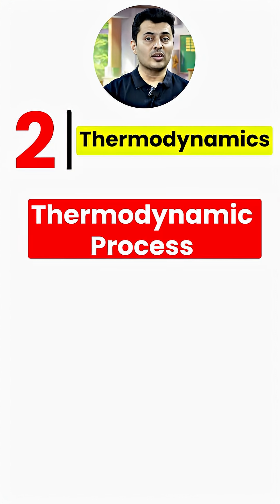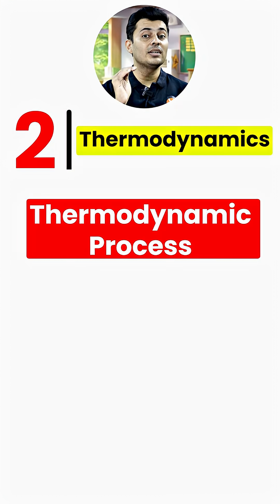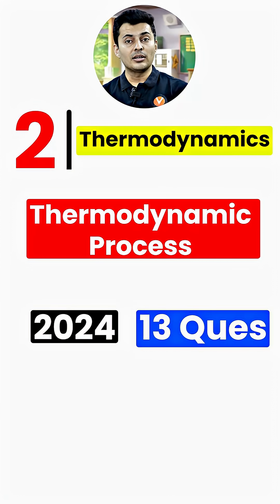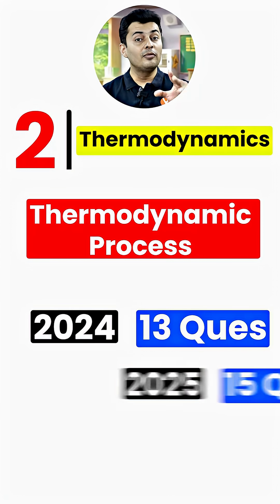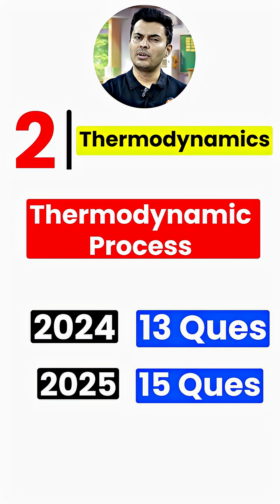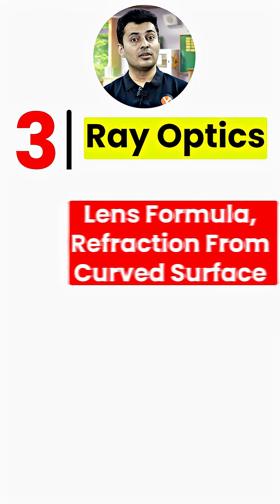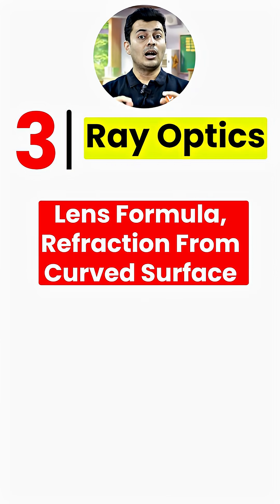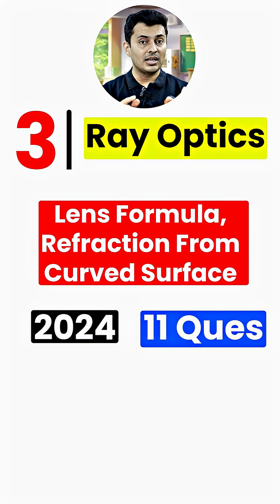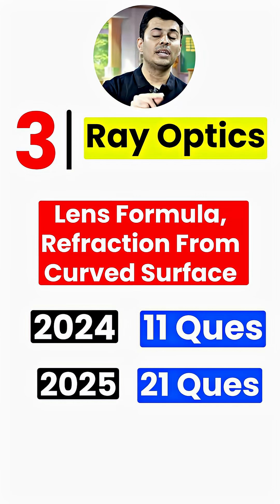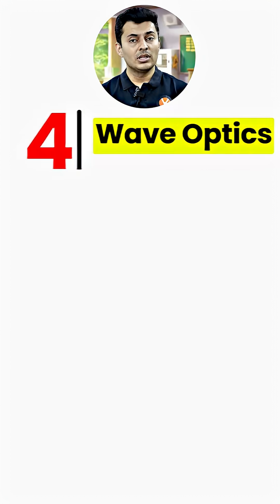In Thermodynamics, specifically thermodynamic processes, there were 13 questions in 2024 and 15 questions in 2025. Number three is Ray Optics — lens formula and refraction from curved surfaces appeared 11 times in 2024 and 21 times in 2025.